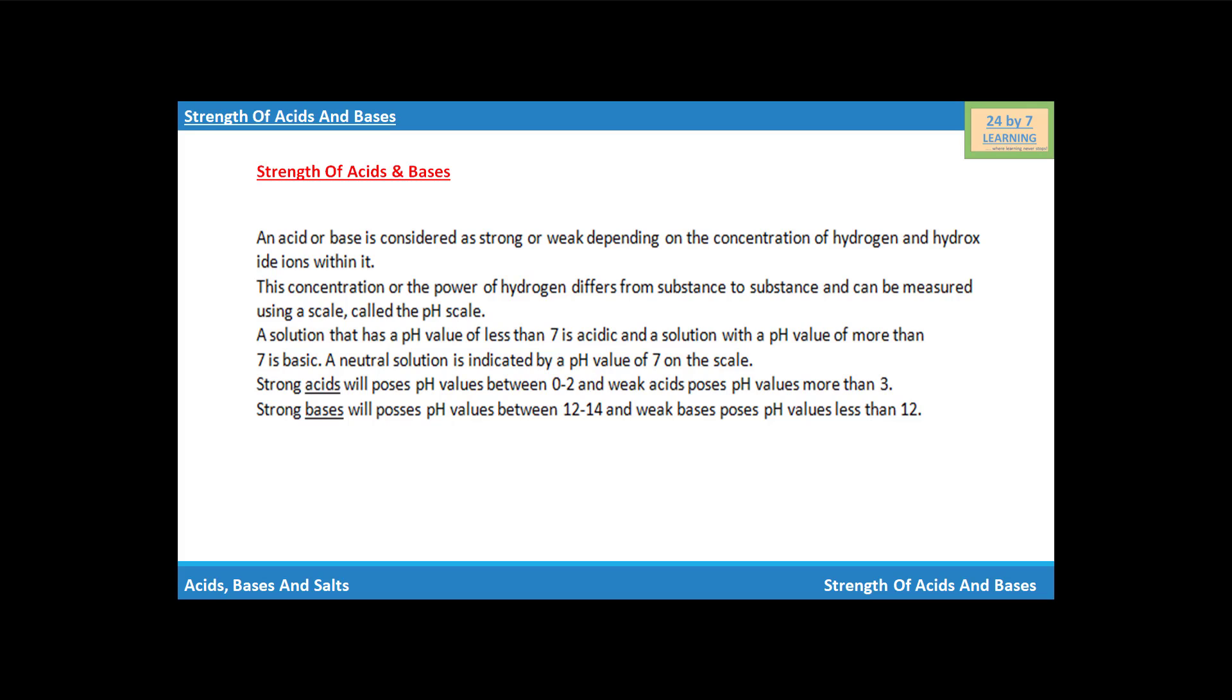An acid or base is considered strong or weak depending on the concentration of hydrogen and hydroxide ions within it. This concentration, or the power of hydrogen, differs from substance to substance and can be measured using a scale called the pH scale.